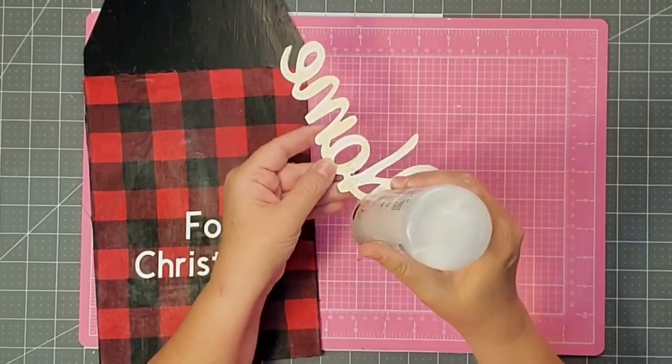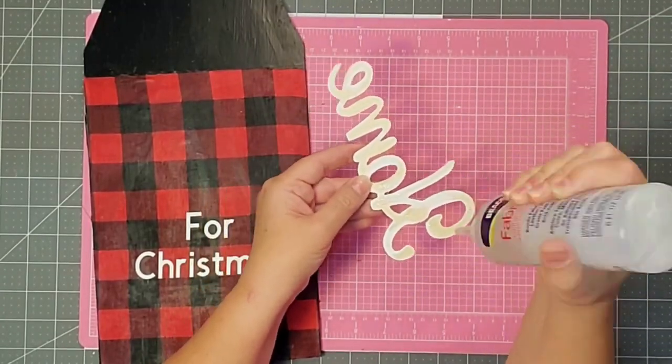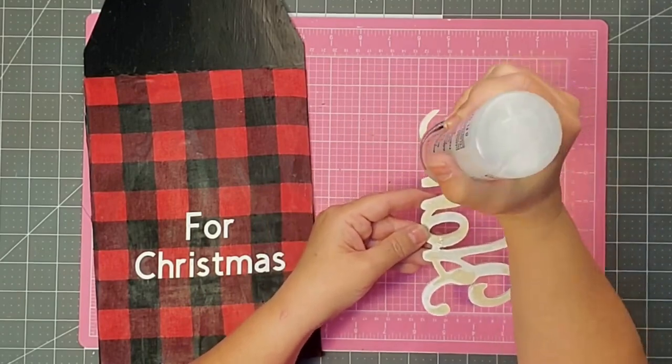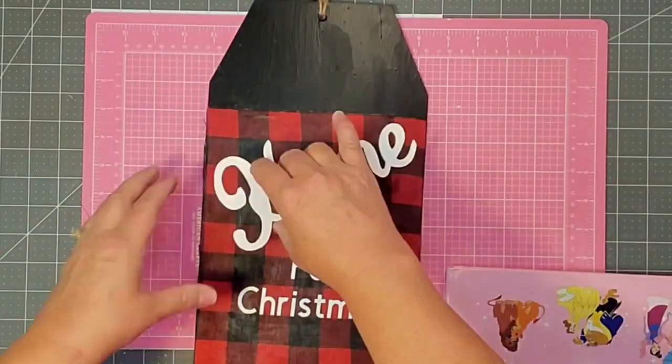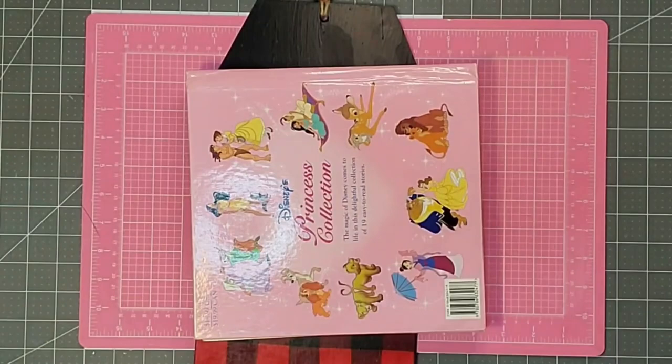Then I used Fabri-Tac to attach the word home down to my sign at an angle. And once it's on there like I want it, I'm going to put several books on it and let it dry for about an hour.